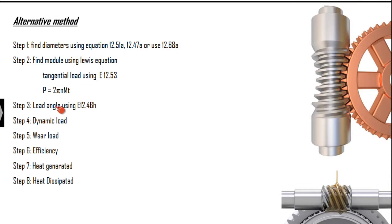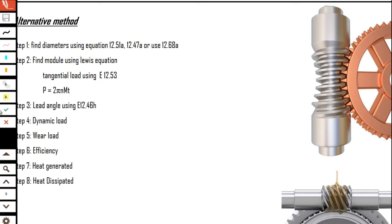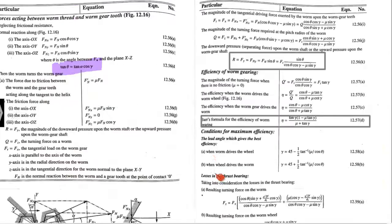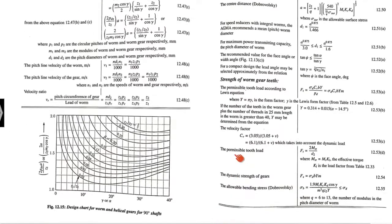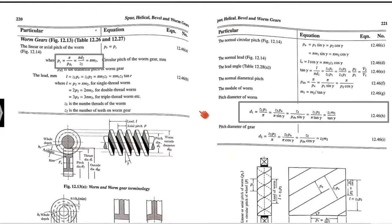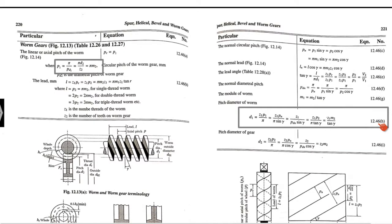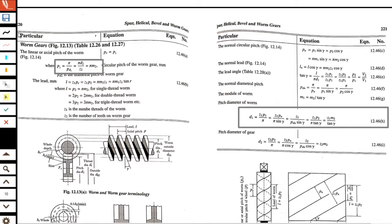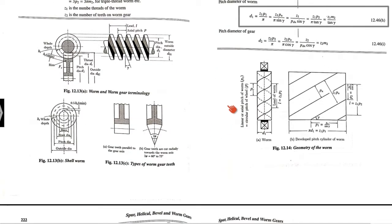After calculating the lead angle using equation 12.46, everything else remains the same — the dynamic load, wear load, efficiency, and heat calculations all remain the same. In the previous approach, lead angle was selected from a table, but here it is calculated using equation 12.46.